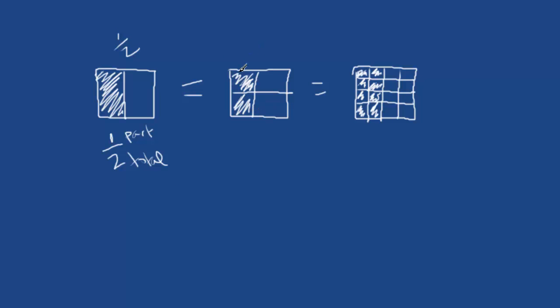Now, the same thing can be said for this one right here. It is two parts. We have two parts total out of four different parts, but really when we look at it, we can simplify this right here.